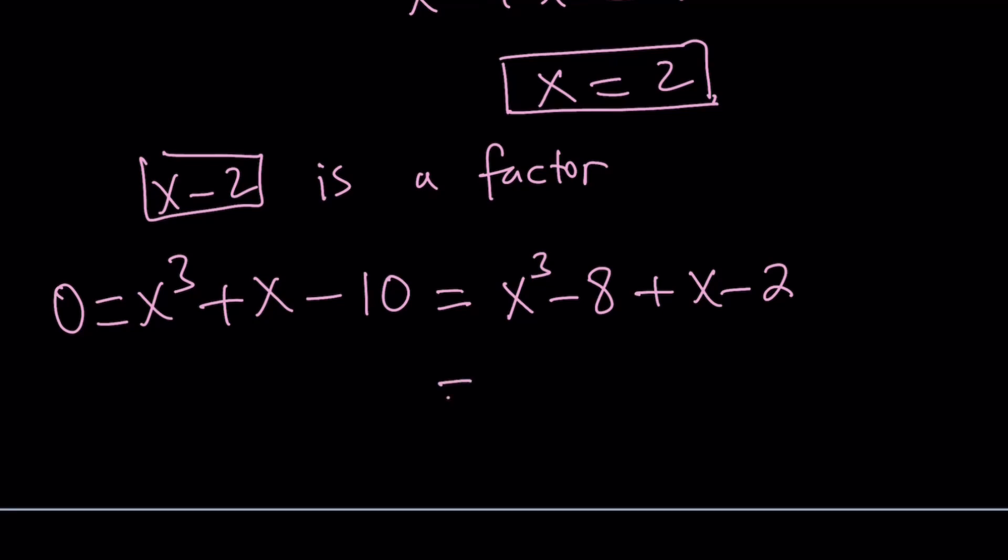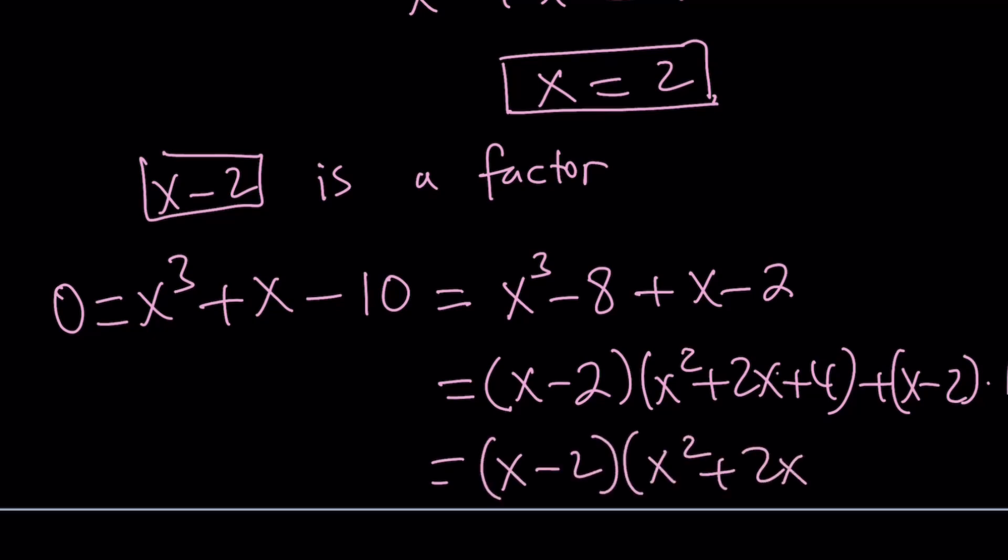So, polynomials. Anyway, so this is factorable by difference of 2 cubes. So, x minus 2 times x squared plus 2x plus 4. And then plus x minus 2 times 1. And now we can go ahead and take out x minus 2. And then we get x squared plus 2x plus 5. 4 plus 1 is 5. And this is equal to 0.